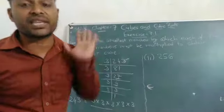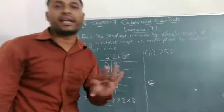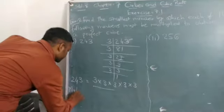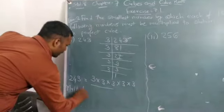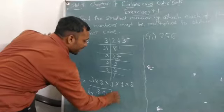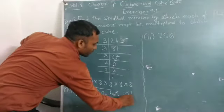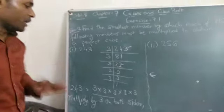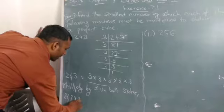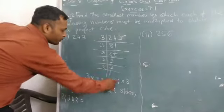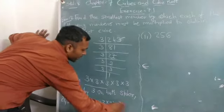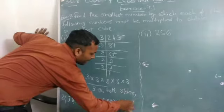So, 1 time will be missing. And what number will be missing? 3 is missing. So, we multiply by 3 on both sides.